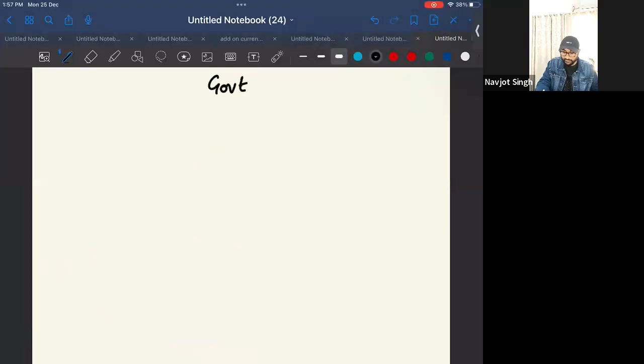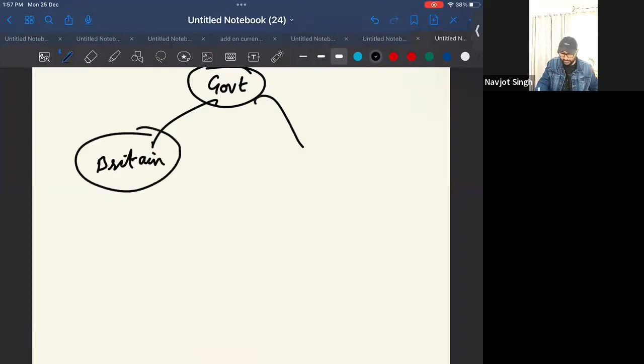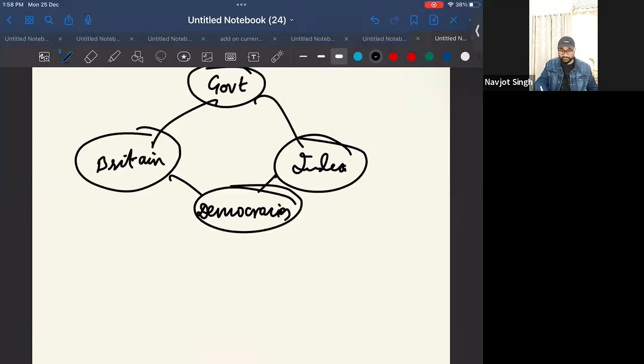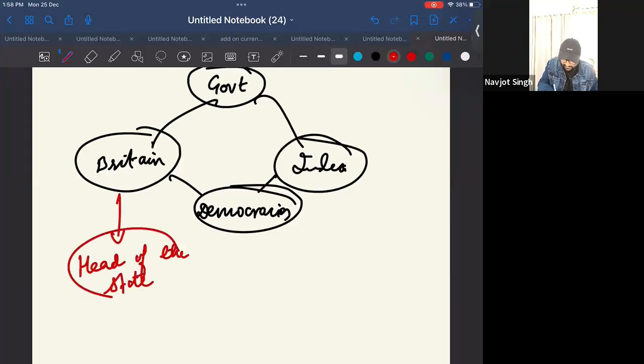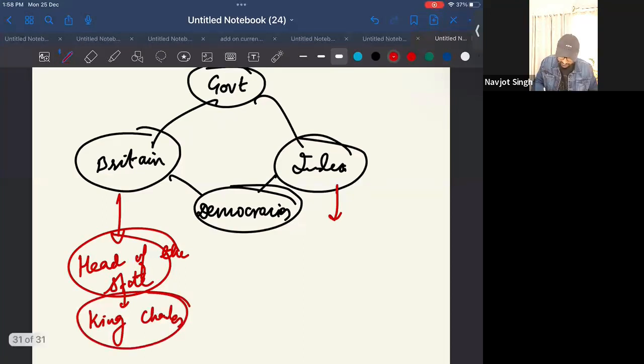A government, for example, let's take the example of Britain and India. Now, both are democracies. Both India and England are democracies. But, in Britain, the head of the state, who is the head of the state in Britain? Queen. Yeah. Queen and now King Charles. Now King Charles. So, what is the head of the state here? Hereditary. It is not an elected head. So, it is a monarchy.